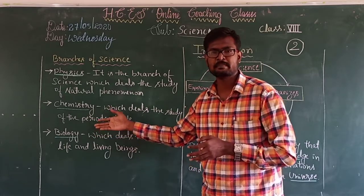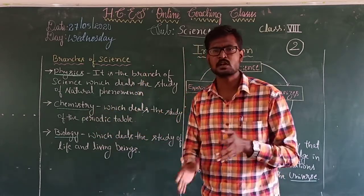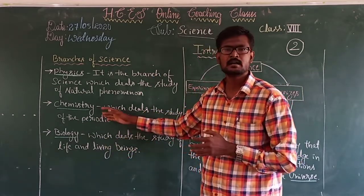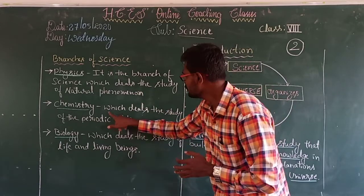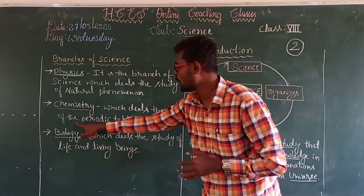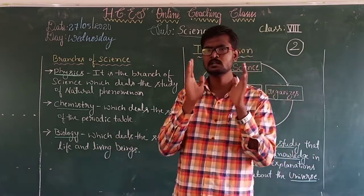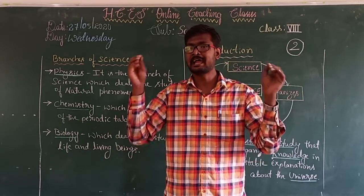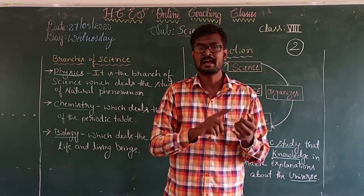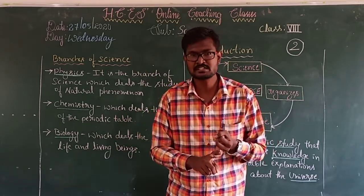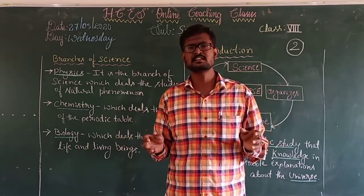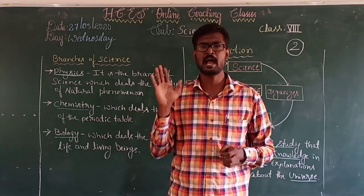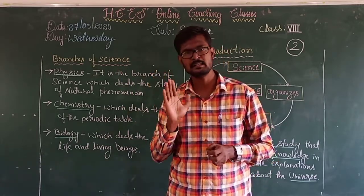Let us move on to the next main branch, which is chemistry. Chemistry is also a branch of science which deals with the study of the periodic table. If you want to learn chemistry, the first thing you have to study is the periodic table and the elements in it — the chemical structure, physical structure, and equations. All these things come under chemistry.